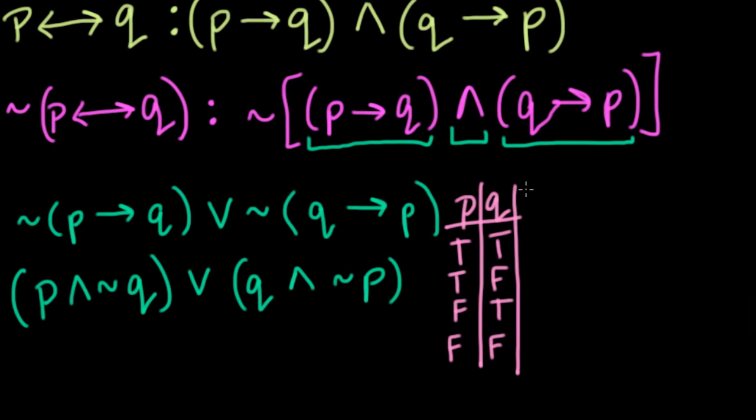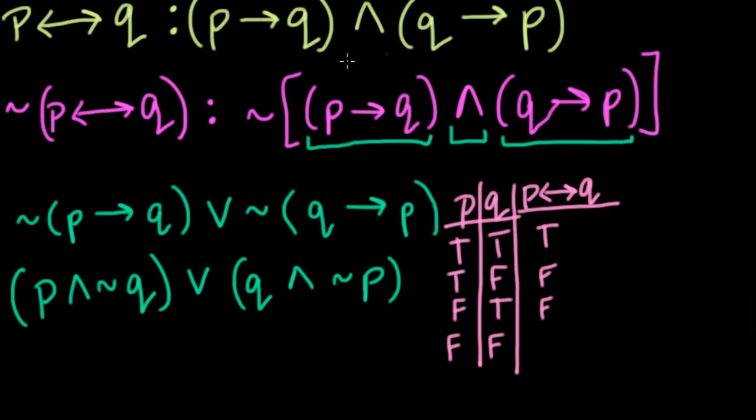So a biconditional statement says that P if and only if Q. So what does that mean? That means that if P and Q are true, then it's true. If one is false, then it's false. And what happens if they're both false?